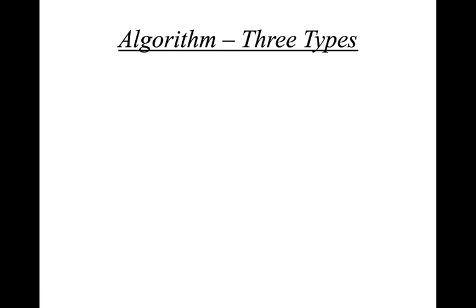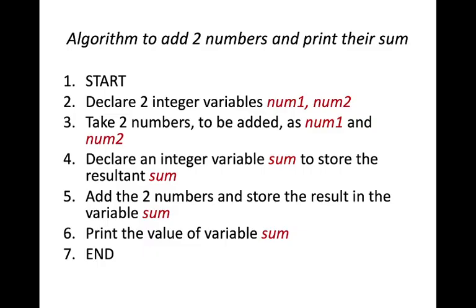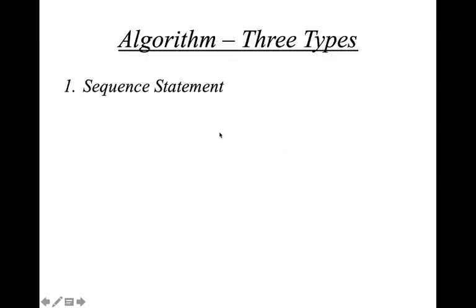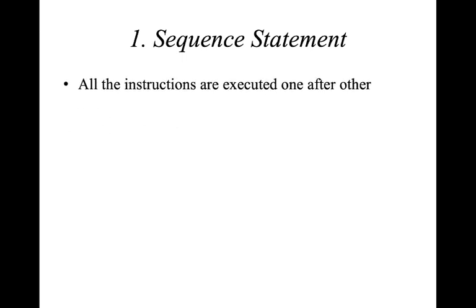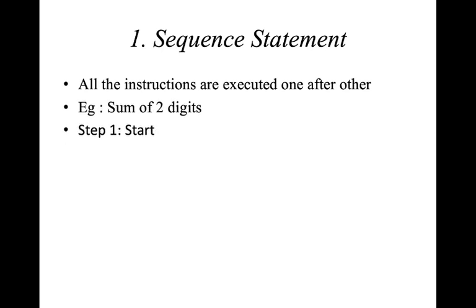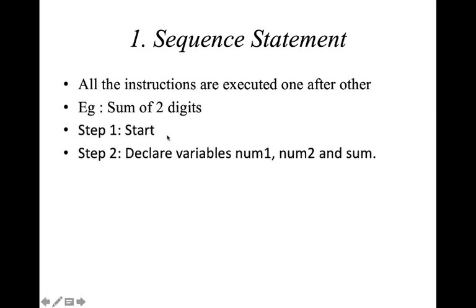In an algorithm there are mainly three types of statements: sequence statements, selection or decision statements, and iteration or repetition or looping statements. In a sequence statement, all instructions are executed one after the other in order — it is a step-by-step procedure. The addition example we just saw is an example of sequence statements.